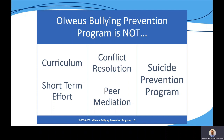OVEAS is not conflict resolution or peer mediation. Bullying is not peer conflict — it is based on an imbalance of power, and thus should not be treated the same as peer conflict. OVEAS is not designed to be a suicide prevention program. Bullying can be related to depression and suicidal ideation; however, suicide is a very complicated issue and there are many factors that put students at risk.